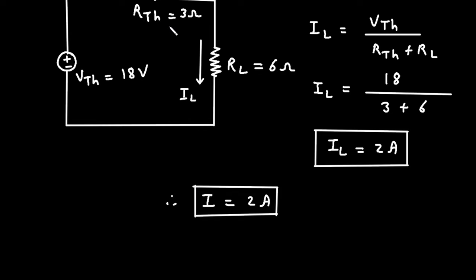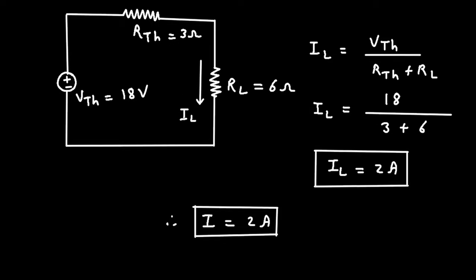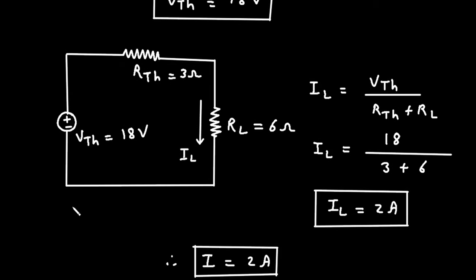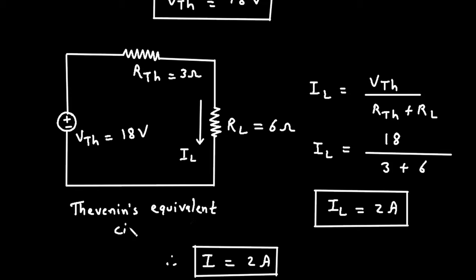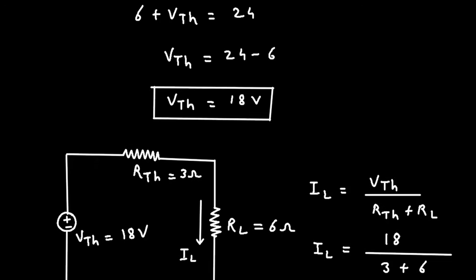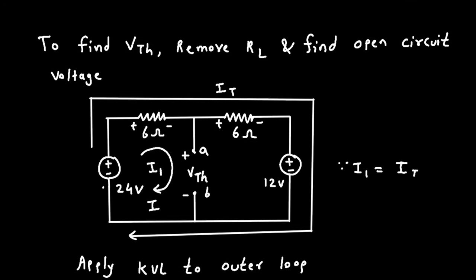Remember that this circuit is called Thevenin's equivalent circuit, and the current I found is 2 Ampere.